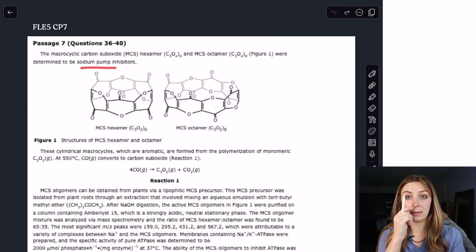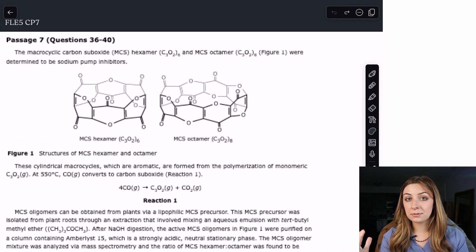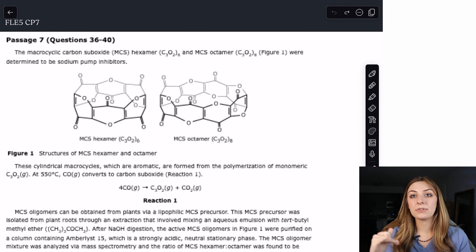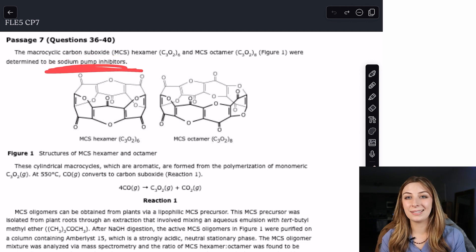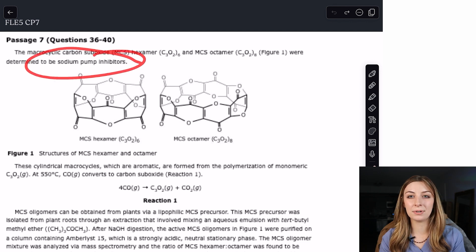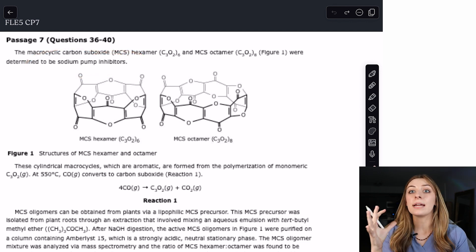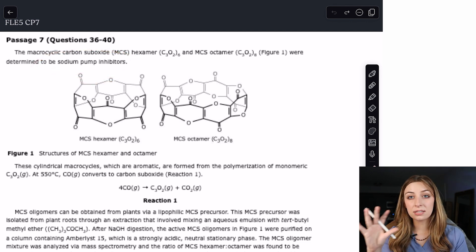Just to remind everybody, I'm going to read aloud and say what I'm thinking in my head as I'm reading. It starts out: the macrocyclic carbon suboxide MCS hexamer and MCS octamer were determined to be sodium pump inhibitors. When I see sodium pump inhibitors, I'm immediately thinking of inhibition, competitive inhibition, Michaelis-Menten, Lineweaver-Burk, all that kind of stuff.